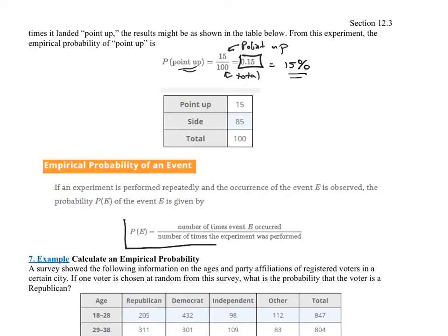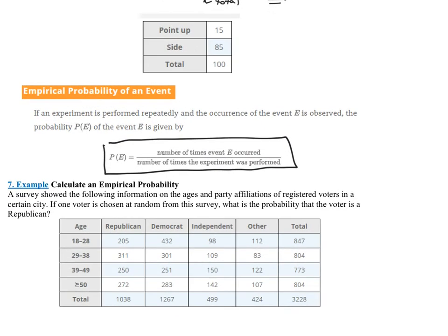Exact same thing here, once again, to find the probability, the empirical probability of an event, it's the number of times that you got what you wanted over the total number of times the experiment was done.